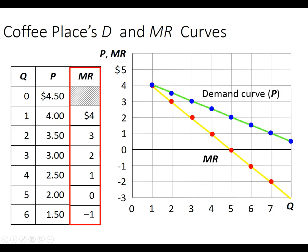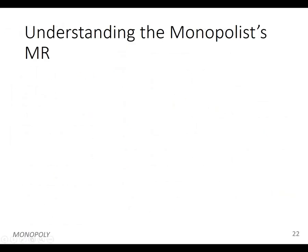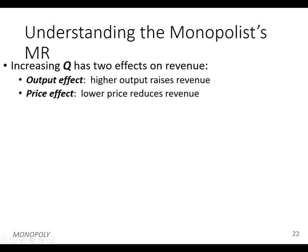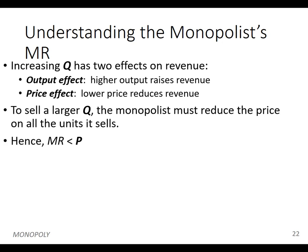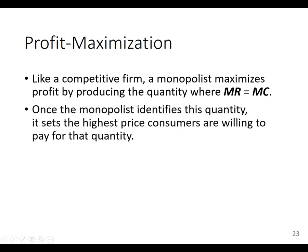The consumer is going to pay it because at quantity three, their willingness to pay — the reservation price — is $3. So there's an output effect: if I increase quantity I may increase revenue, but the lower price also reduces my revenue. This rule holds true for both perfect competitors and for monopolies.